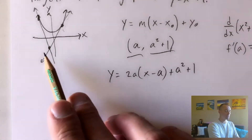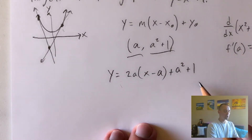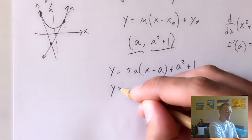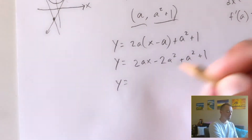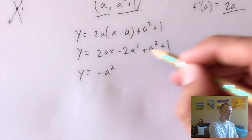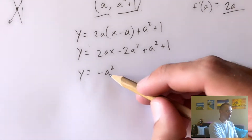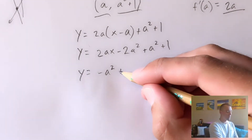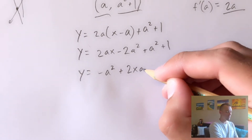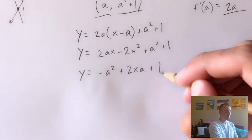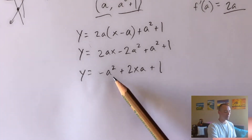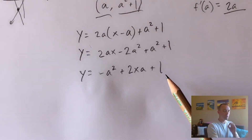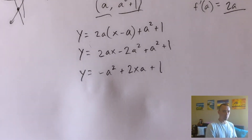We can simplify this, which should make things easier going forward. Combining like terms, negative two A squared plus A squared gives us negative A squared, then we have two xA plus one. What we want to do now is think of this as a function of A and solve for A. Since we have an A squared term, an A term, and a constant term, we can treat this as a quadratic, thinking of A as our variable just for a second.